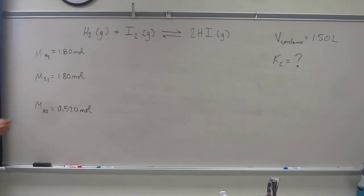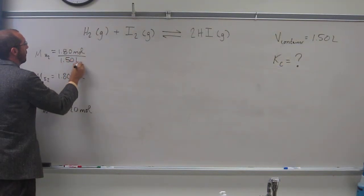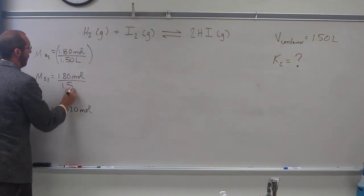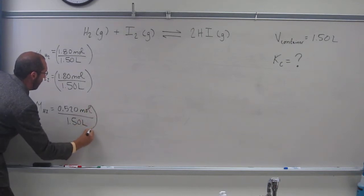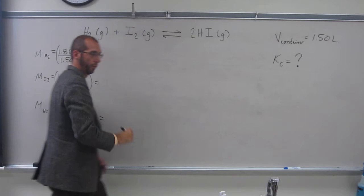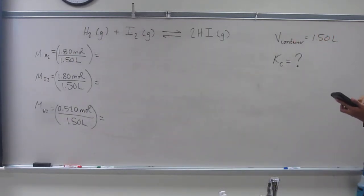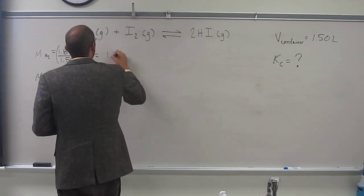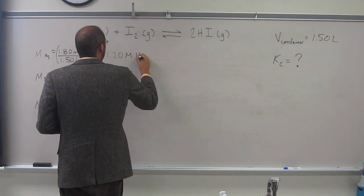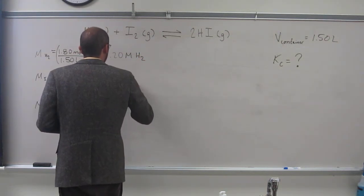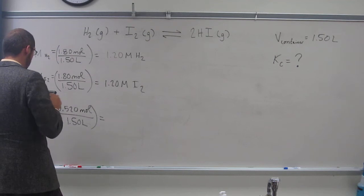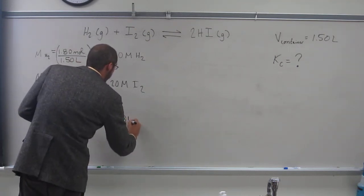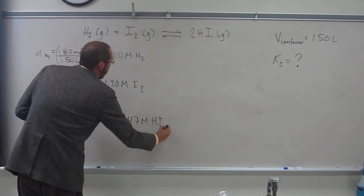Is everybody okay with me doing that? So I'm going to divide this by 1.50 liters. 1.20 molar H2, 1.20 molar I2, and 0.347 molar HI.